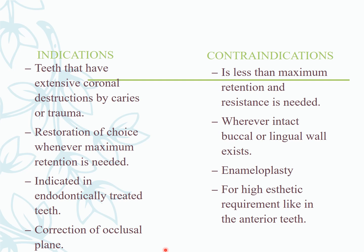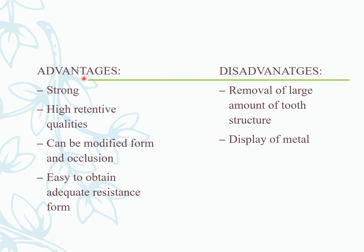Full veneer crowns are also indicated to correct the occlusal plane in full mouth rehabilitation cases. Contraindications include situations where less than maximum retention and resistance are required, where intact buccal or lingual walls exist, where enameloplasty is present, or where high aesthetic requirements exist such as in anterior teeth. Advantages include strength, good retentive qualities, modifiable form and occlusion, and ease of obtaining adequate resistance form. Disadvantages include removal of significant tooth structure and potential metal display depending on material choice.